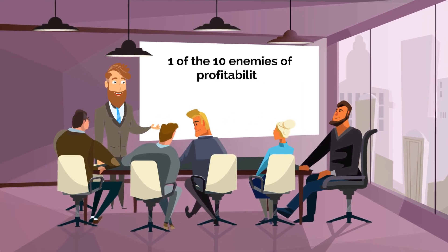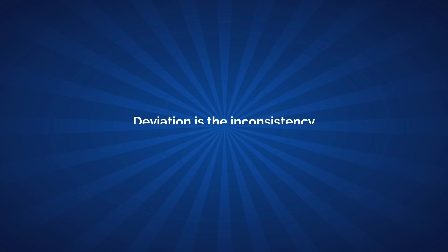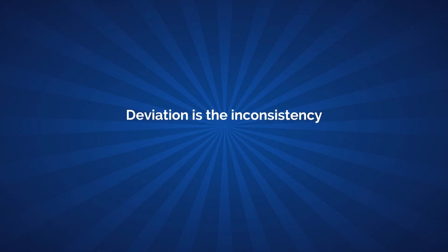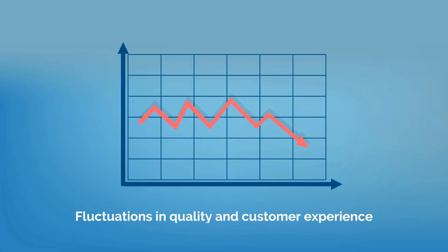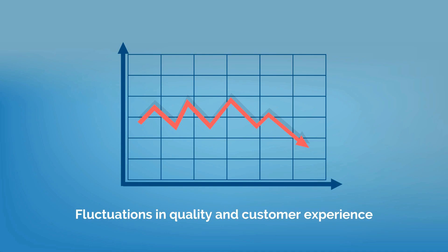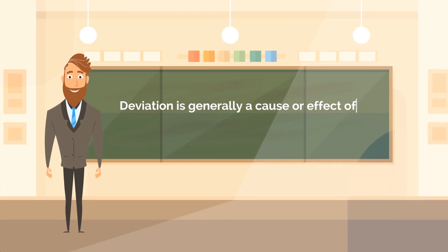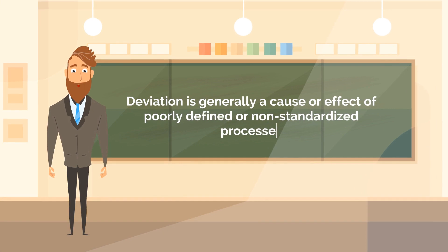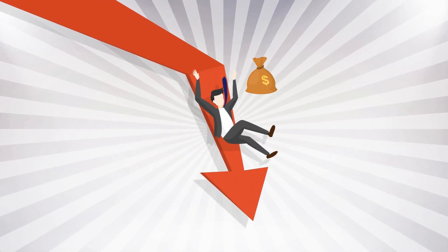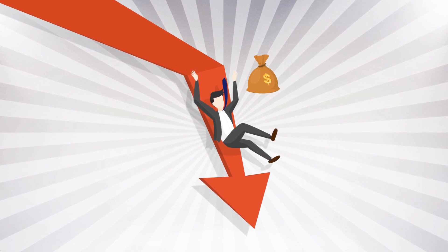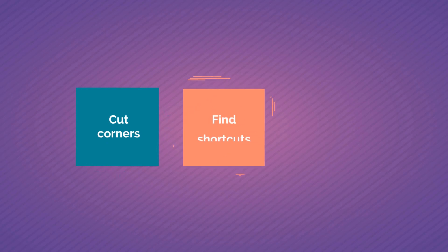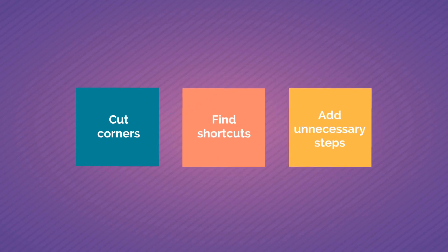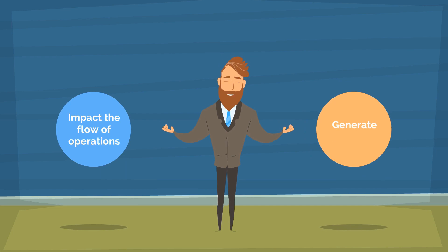That enemy is deviation — the inconsistency or lack of defined, standardized, or dynamic processes that result in fluctuations in quality and customer experience. Deviation is generally a cause or effect of poorly defined or non-standardized processes, and its presence is a sure sign that you are losing profits. The most common attribute of deviation is workers who cut corners, find shortcuts, or add unnecessary steps that impact the flow of operations and generate inefficiency.